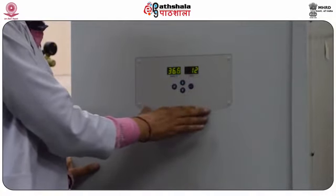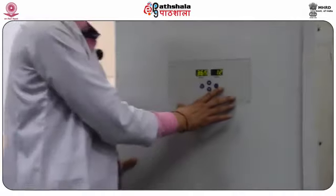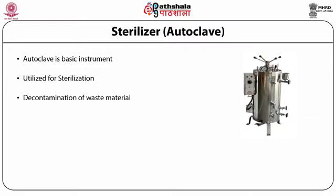You cannot perform tissue culture without the help of a CO2 incubator — that is why it is one of the basic instruments required for animal cell culture. Sterilization is one of the important phenomena in animal cell culture technology, performed with the help of a basic instrument known as the autoclave, utilized for sterilization of many heat-labile components.